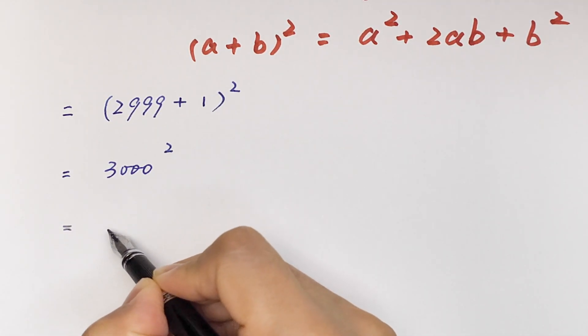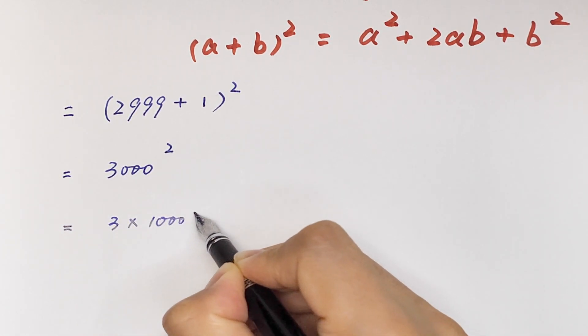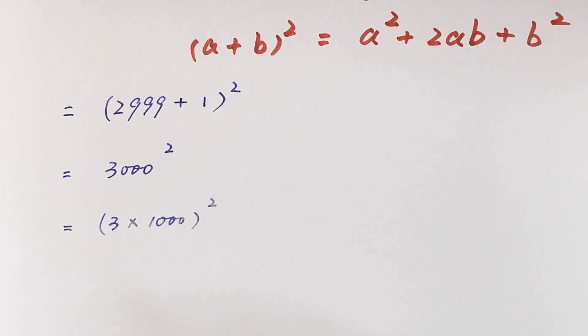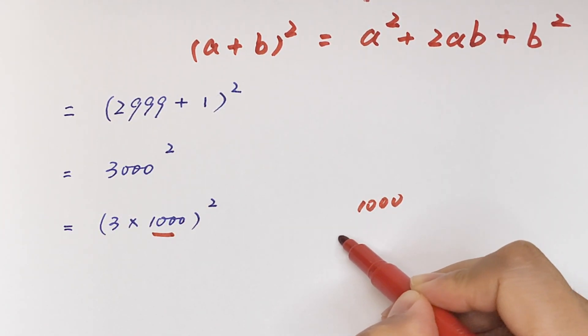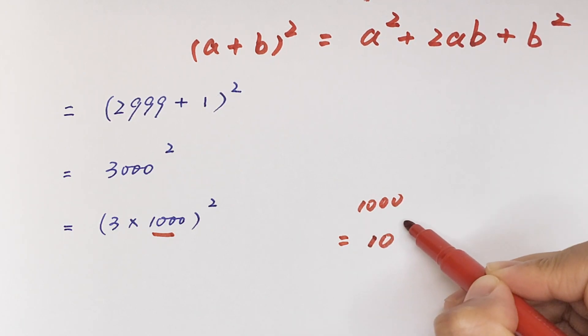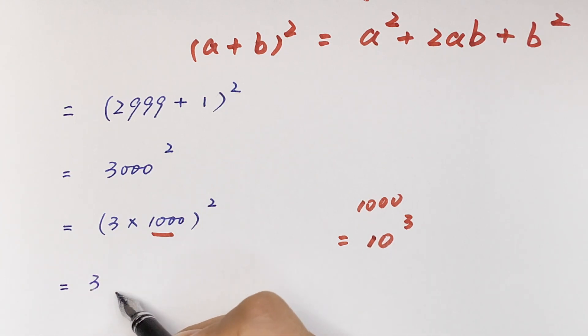It is the same as 3 times 1000 bracket square. And we know 1000 is the same as 10 cubed. So it will be equal to 3 times 10 cubed bracket square.